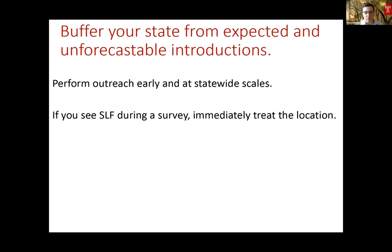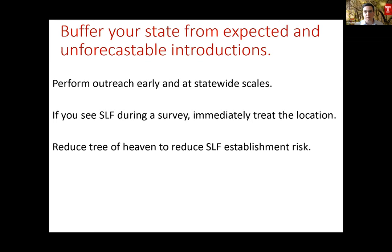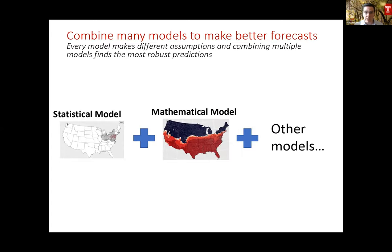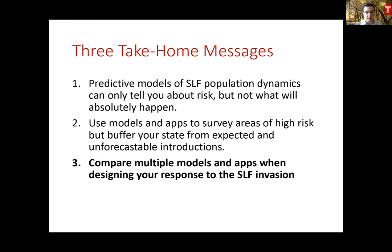If you see spotted lanternfly during a survey, immediately treat that location — don't wait, because spotted lanternfly move a lot and you might not find them again. Increasingly, reducing tree of heaven does reduce spotted lanternfly establishment risk; they grow really quickly on tree of heaven, especially with a mixed diet with wild grape or other species. Finally, predictive modeling needs many different models to increase accuracy and precision. Every model makes different assumptions, and combining multiple models finds the best and most robust predictions. The final take-home message: compare multiple models and applications when designing your response to the spotted lanternfly invasion.